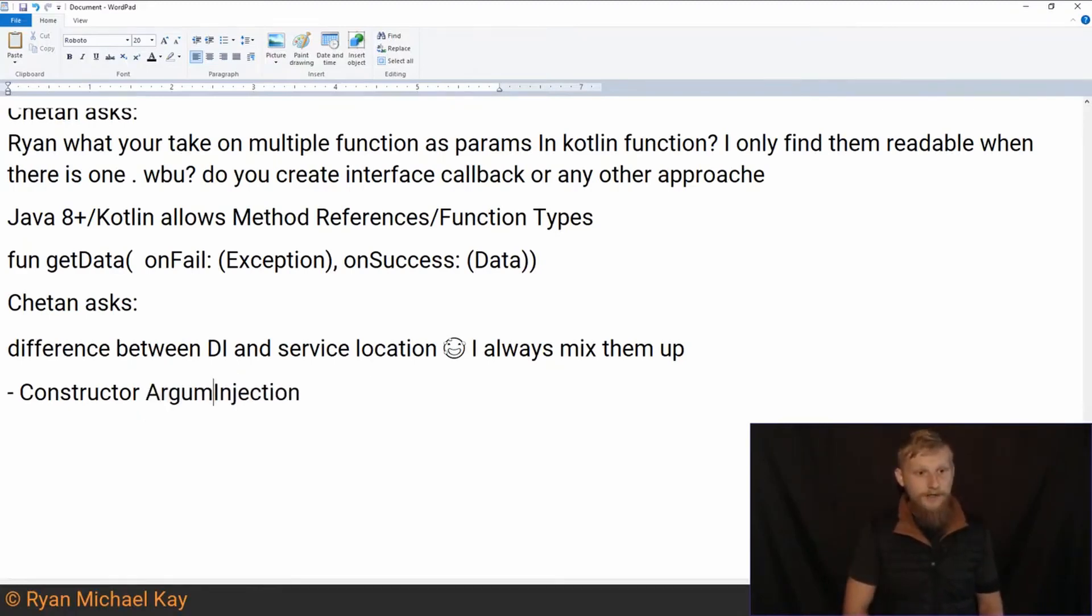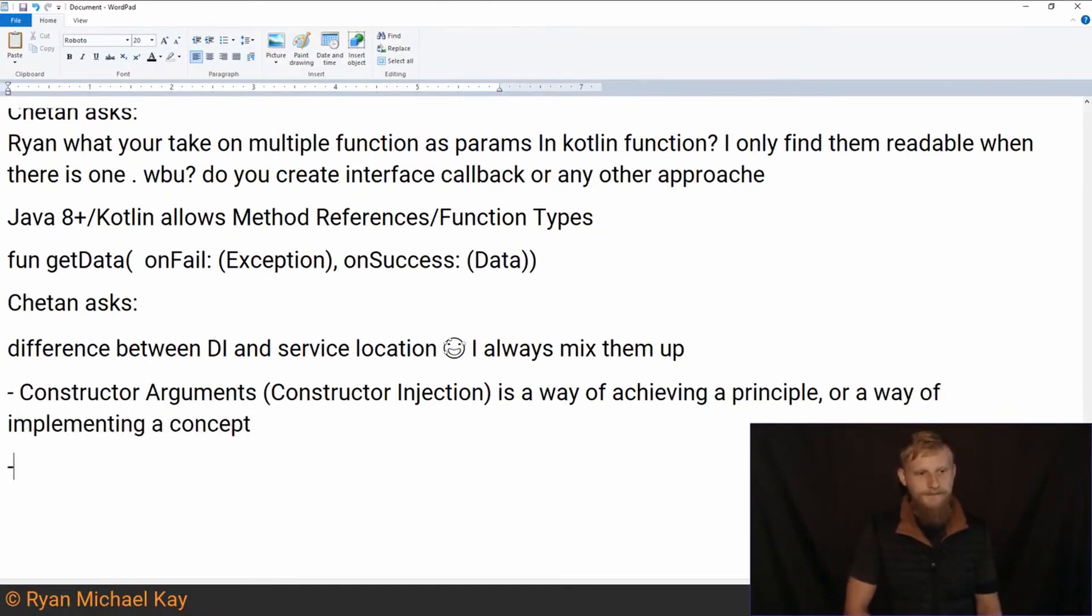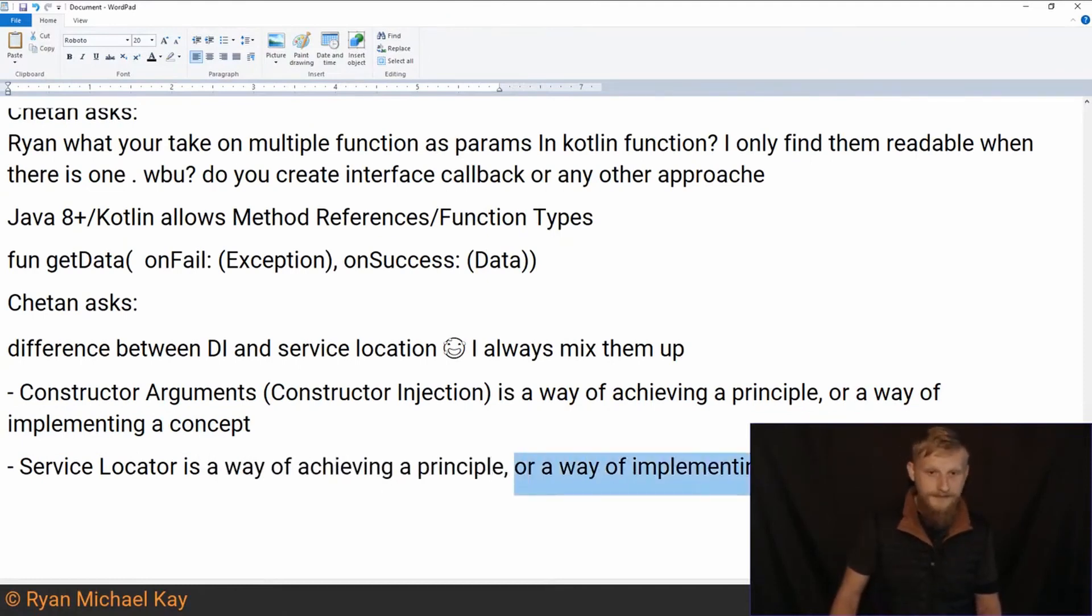So constructor arguments, which we call constructor injection in our big technical language, is a way of achieving a principle, or a way of implementing a concept. The service locator is a way of achieving a principle or implementing a concept.